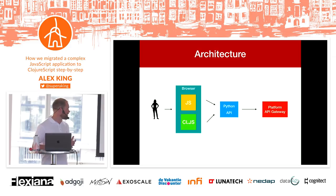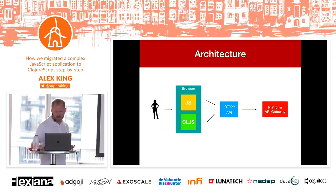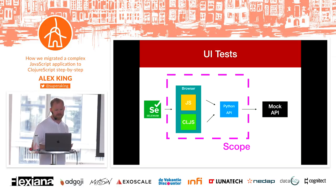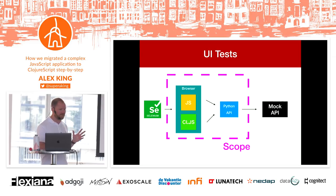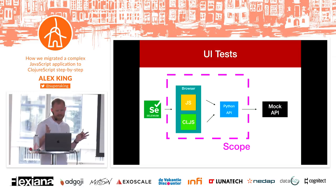The new architecture still has the API gateway and Python API, with ClojureScript alongside JavaScript. UI tests are really hard to write and even harder to debug, so we limit their scope and build a mock of the platform gateway API, using Selenium to drive tests in the browser.